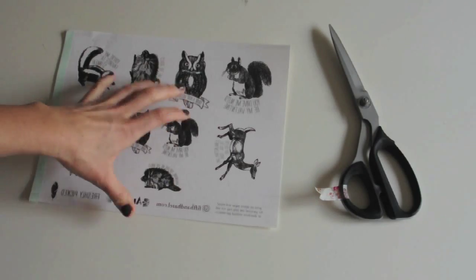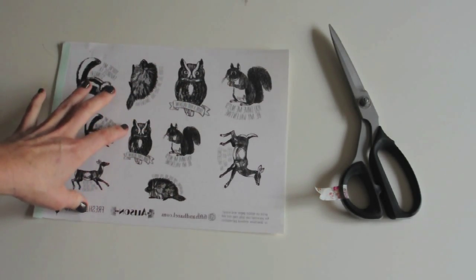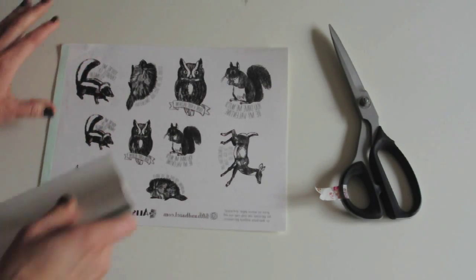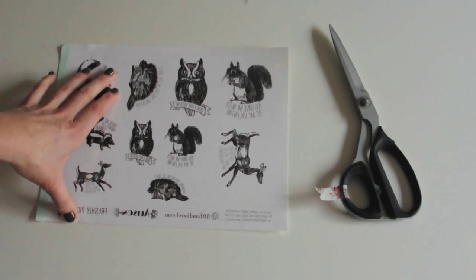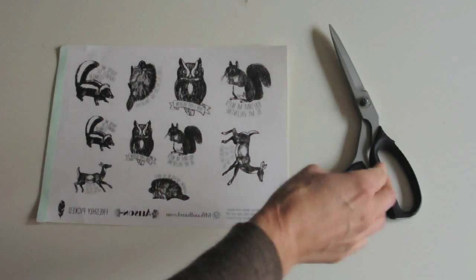Okay, and then once you've adhered it, these are actually silhouette machine temporary tattoo papers, and so you can put this back in if you have a silhouette. But I don't have a silhouette, and I found that cutting around the edges worked just fine, so I'm going to do that now.